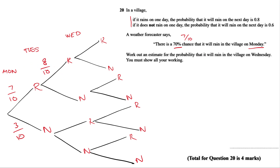If it rains on Tuesday, the probability it will rain on Wednesday is 0.8. If it rains on Monday, what's the probability it will not rain on Tuesday? We know 0.8 that it will rain, so 0.2 it will not rain. And on Wednesday, 0.8 it will rain means 0.2 it will not rain. Over here we have 0.3 that it will not rain, and if it does not rain the probability it will rain the next day is 0.6.